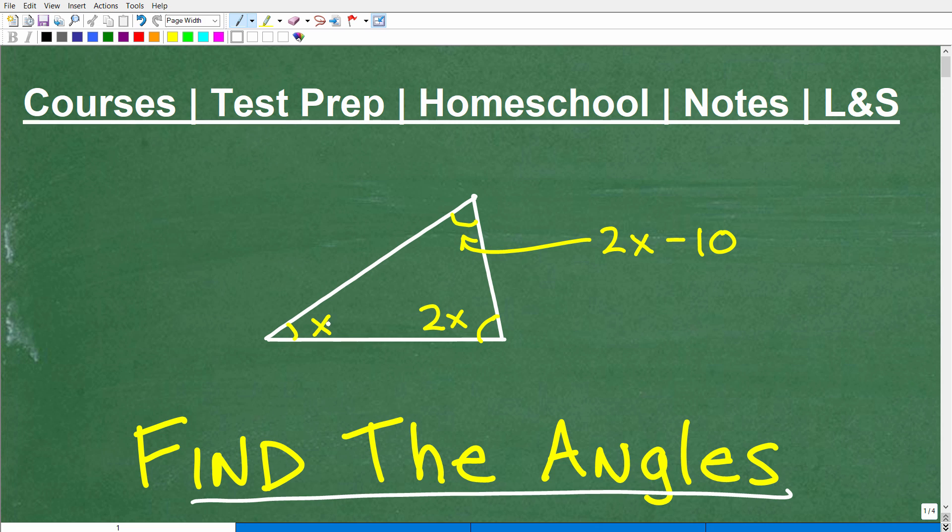So right here, this angle would be x, and we want to be a little bit more precise here. We can call this x degrees, and this angle over here is 2x degrees, and then this angle right here we would express as 2x minus 10 degrees. We want to find the actual angles of this triangle. So do we have enough information to solve this problem?